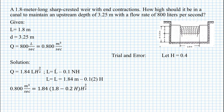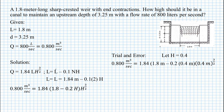let H equal to 0.4. Plugging in the value, we have 0.800 cubic meters per second is equal to 1.84 multiplied by (1.8 meters minus 0.2 times 0.4 meters) multiplied by 0.4 meters raised to the power of 3/2. This gives 0.800 cubic meters per second equals 0.800 cubic meters per second. So our assumption is true.